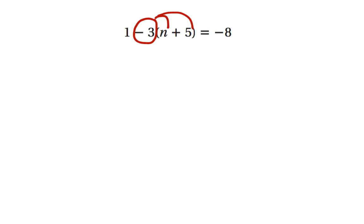We only want to distribute what's attached to the brackets, so we have 1 minus 3n minus 15 equals negative 8.